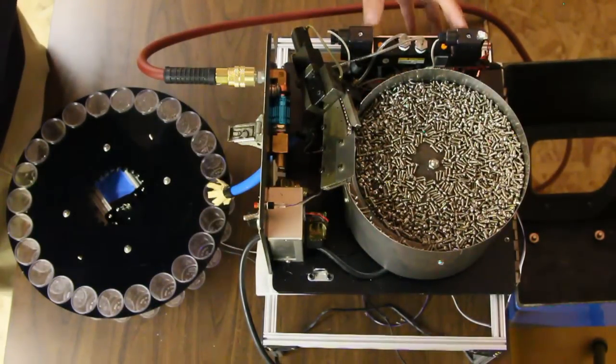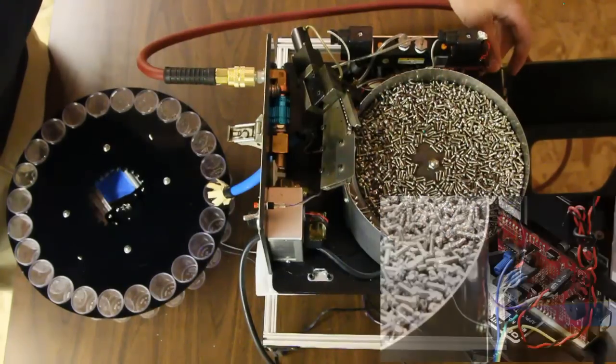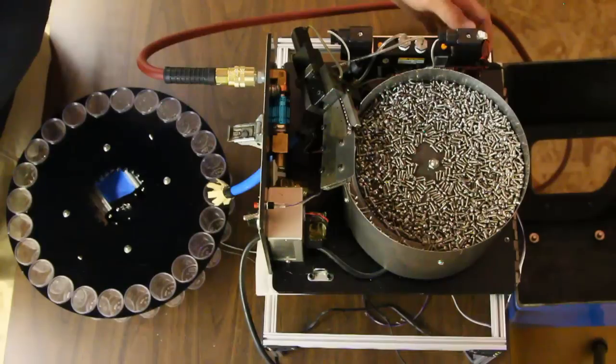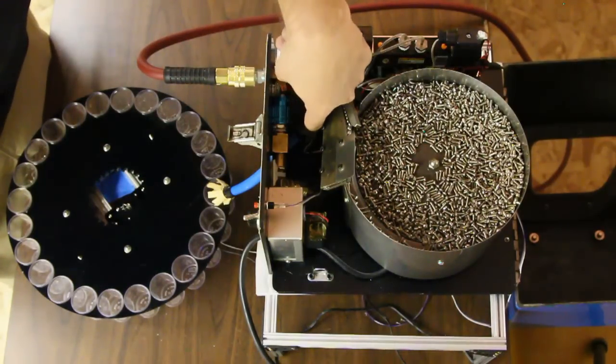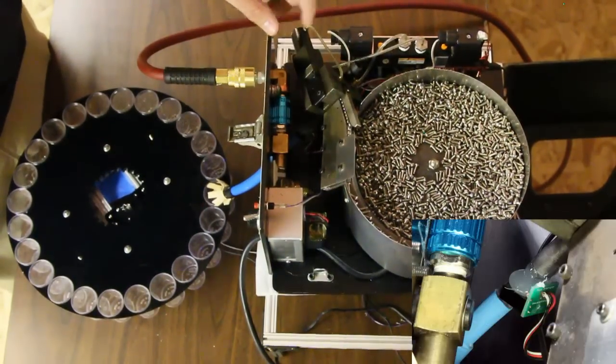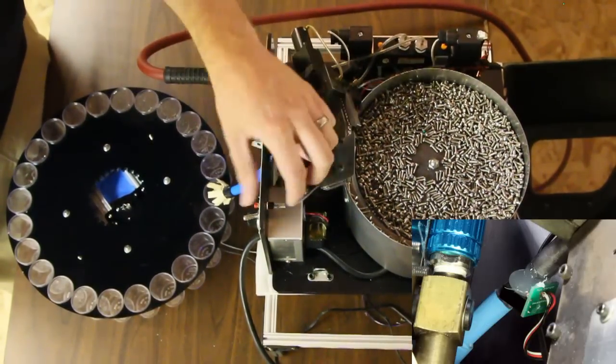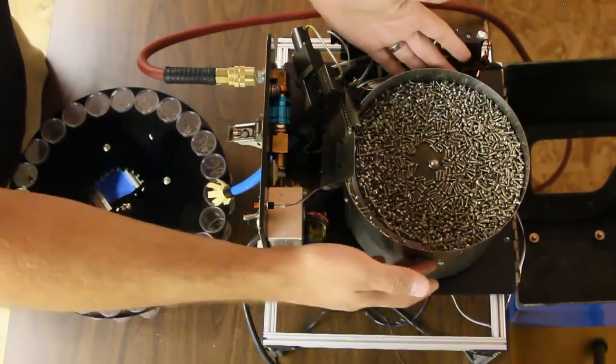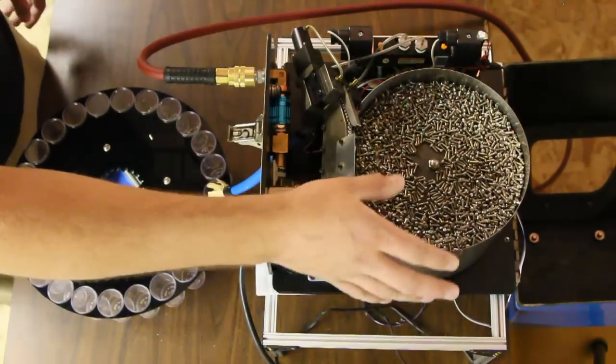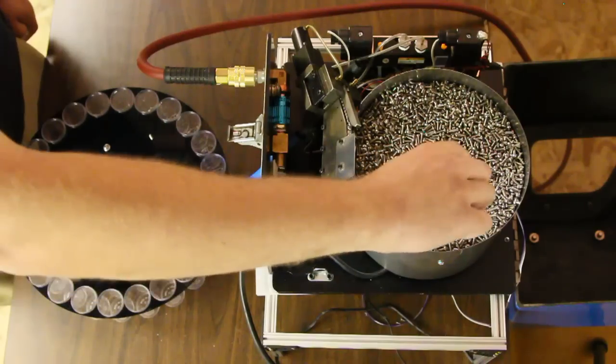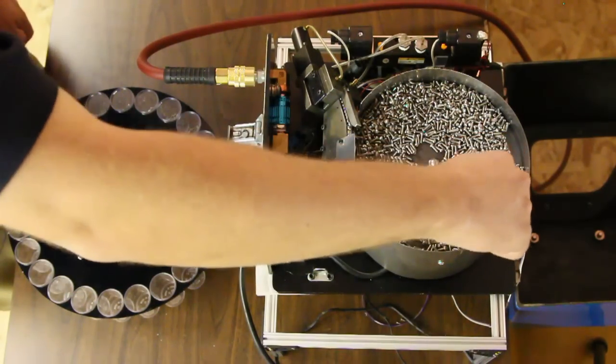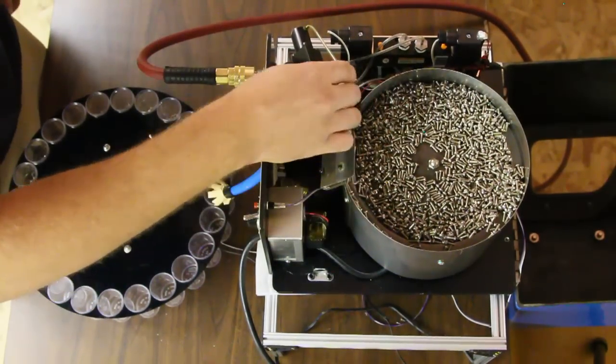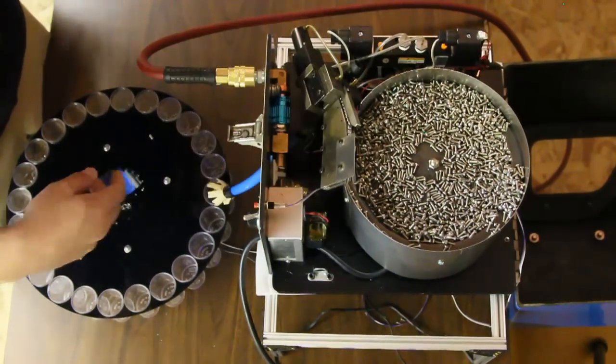So what we have controlling this relay system is an Arduino here with some transistors on board to handle that current and it also reads in the sensor input and also has inputs for this button. The only other thing is our vibratory feeder which is a bowl that vibrates and makes these screws go up this line all the way up and then get fed into the mechanism that switches and pushes them down into the bottles.